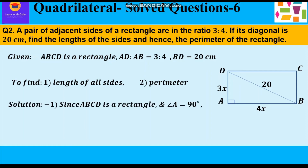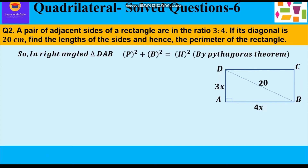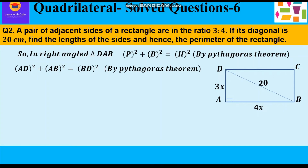Since ABCD is a rectangle, angle A = 90°, so triangle DAB is a right angle triangle. In right angle triangle DAB, we apply the Pythagorean theorem: perpendicular squared plus base squared equals hypotenuse squared. The diagonal BD serves as the hypotenuse. We take AD as the perpendicular and AB as the base, so: AD² + AB² = BD².